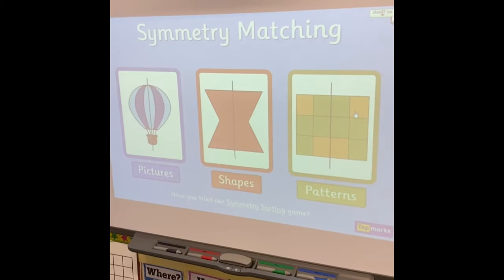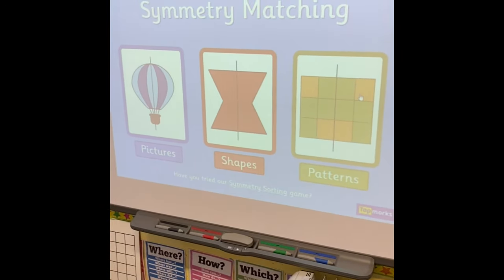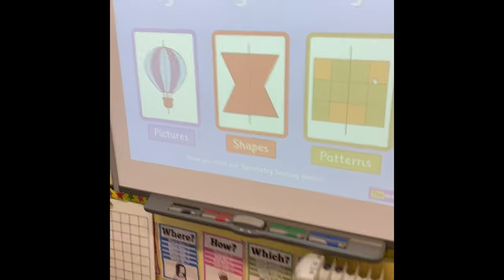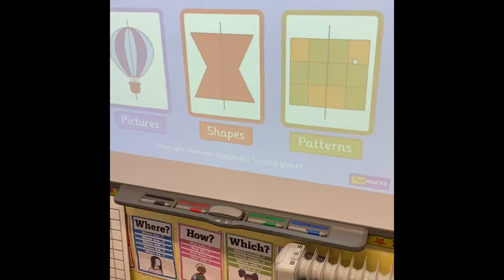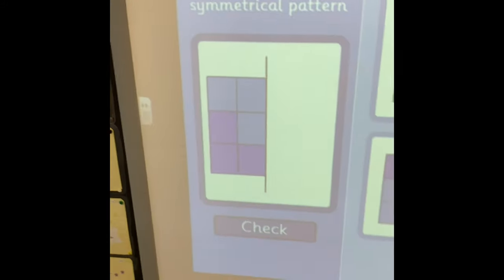Today we're going to continue our theme of symmetry with an online game. I'm going to show you how it works. Here's the game and you can choose pictures, shapes or patterns. Now pictures is the easiest, shapes is the medium and patterns is quite tricky. I'm going to choose patterns.